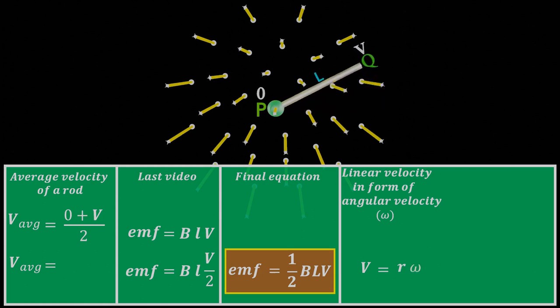Here, radius is equal to length of a conductor L. Therefore, linear velocity V is equal to L times ω.